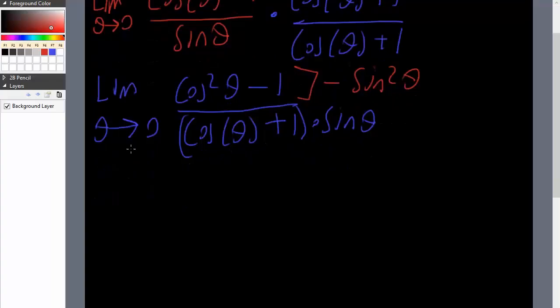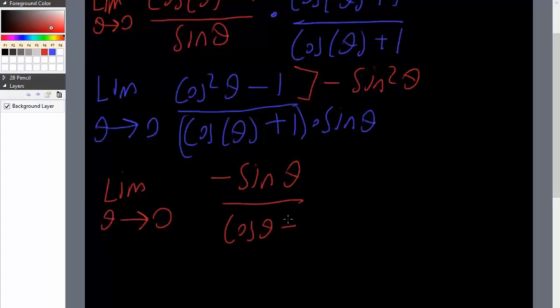Now, by doing this, we can cancel out sine theta in the bottom. So we'll be left off with negative sine theta divided by cosine theta plus 1. Now, we can insert theta equals 0.